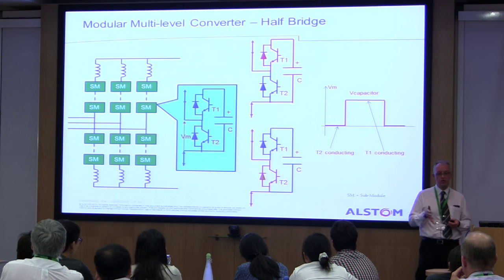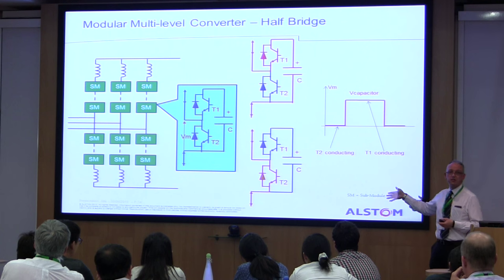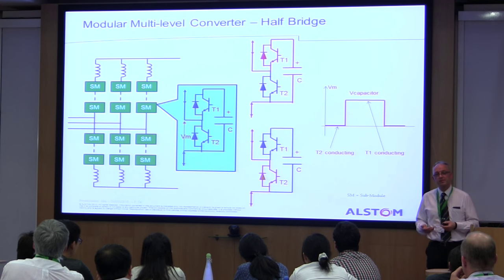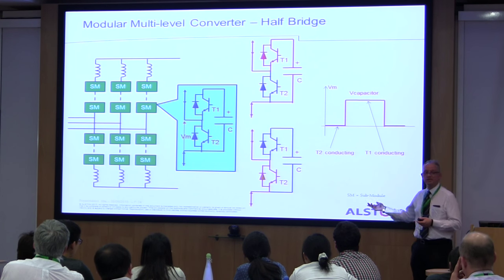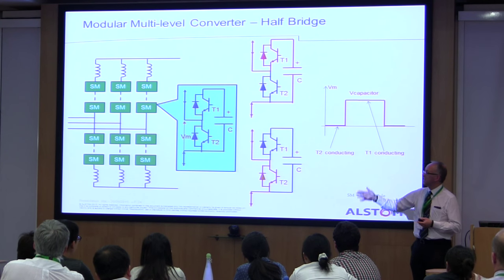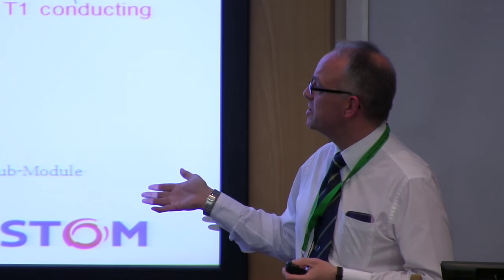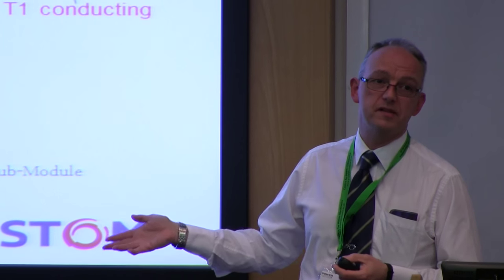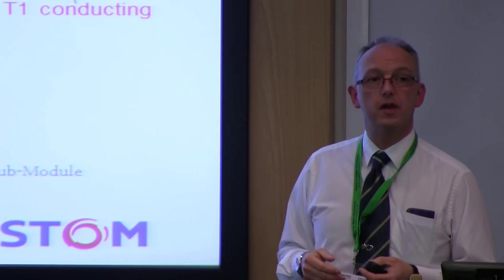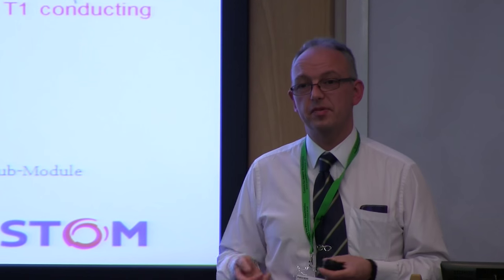So now modular multi-level converters using series half-bridge submodules interconnected becomes feasible. At this point we're talking about losses going from four or five percent down to about one to one-and-a-half percent when this was first introduced ten years ago, now down to one or just below one percent with improved technology. That compares with LCC technology where we're at about 0.7% losses.